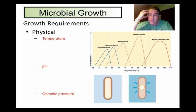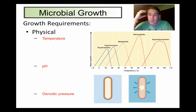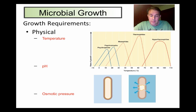Bacterial growth is significantly reduced at refrigerator temperatures and is reduced even further at a typical freezer temperature. On the other end of the spectrum, cooking meat — you have to cook it to at least a certain internal temperature, usually around 160 degrees Fahrenheit, which is about 70 degrees centigrade, in order to ensure that most of the harmful bacteria have been killed. There are microbes that can survive and grow, albeit slowly, in the Arctic ice or even in hot springs underground at very high temperatures.